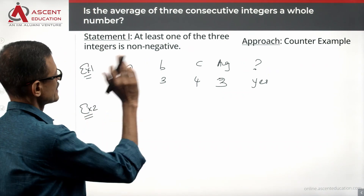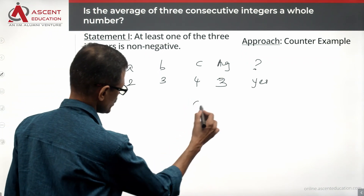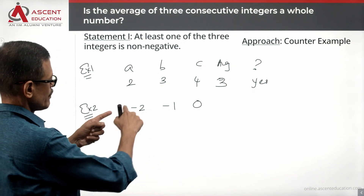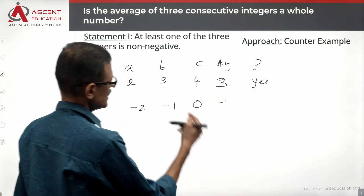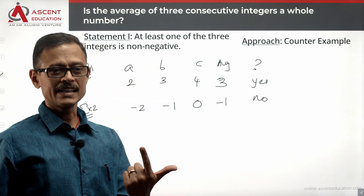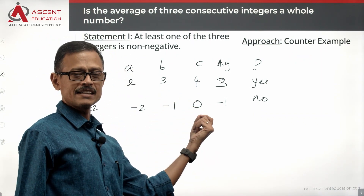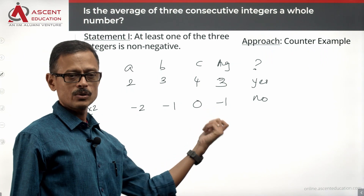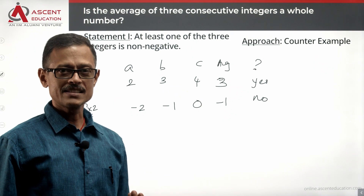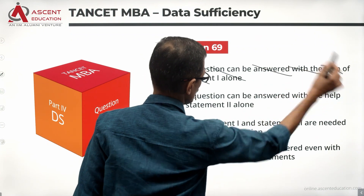Let's look at a counter example where at least one number is non-negative. Take minus 2, minus 1, 0 — one of these is non-negative. The average is minus 3 divided by 3, which equals minus 1. Is the average a whole number? No — the average is not a whole number. We have one case giving yes and another giving no, so we cannot get a conclusive answer. Statement 1 alone is not sufficient.